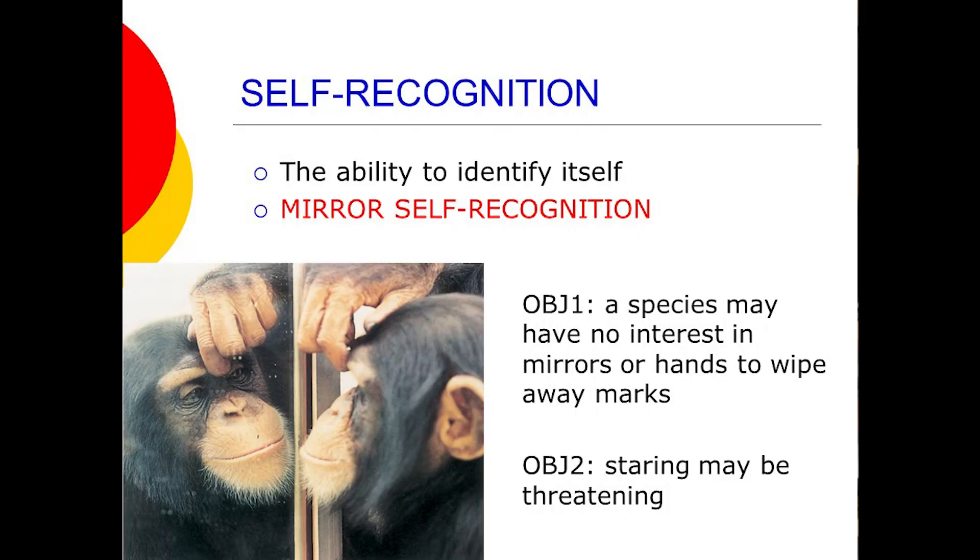Obviously this is a new thing — you get a dot on your forehead and you notice something on yourself. If you can recognize yourself in the mirror, according to this theory, you are exhibiting consciousness. But there are two objections. The first is that a species may have no interest in mirrors or lack hands to wipe away the marks. If you find mirrors boring, the test won't work, but that doesn't mean you're conscious or not — it's irrelevant.